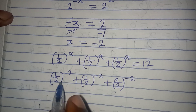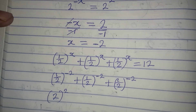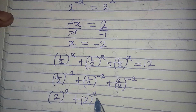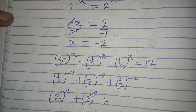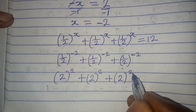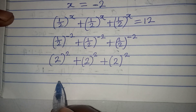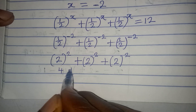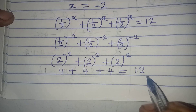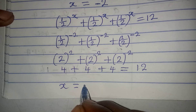Instead of 1 over 2 to the negative 2, we get 2 to the power of 2, and the same for each term: 2 squared plus 2 squared plus 2 squared. This gives us 4 plus 4 plus 4, which equals 12. This confirms that X is equal to negative 2. Thank you very much for watching.